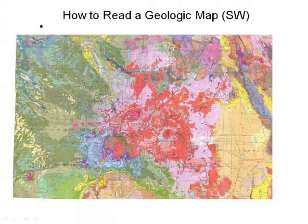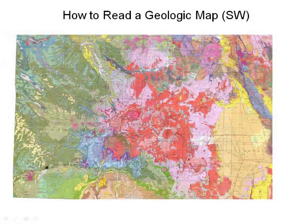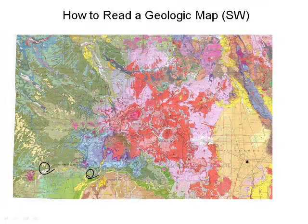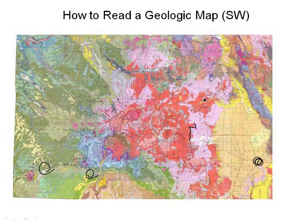In the southwest there are lots of mountains. You'll have Telluride Ski Resort kind of probably down here, and Durango here. Here's Alamosa in here somewhere. Look at all these igneous rocks right here.